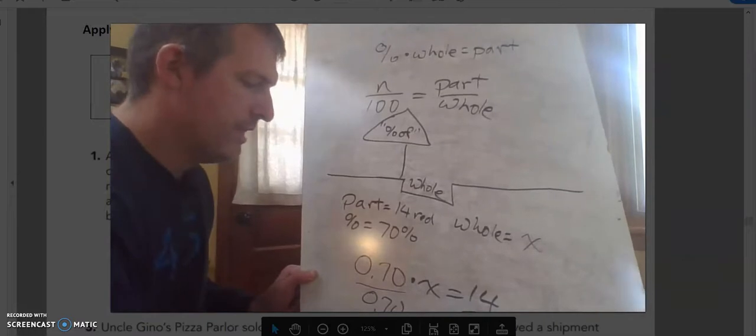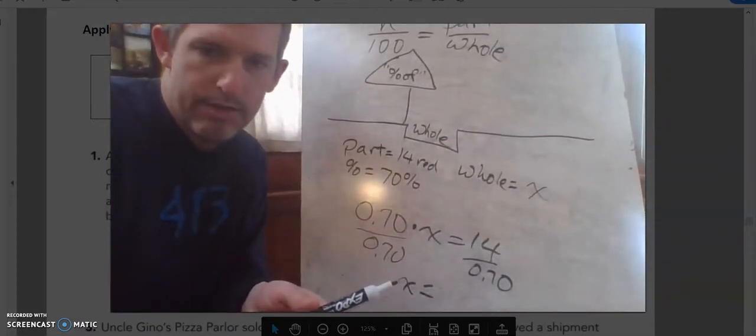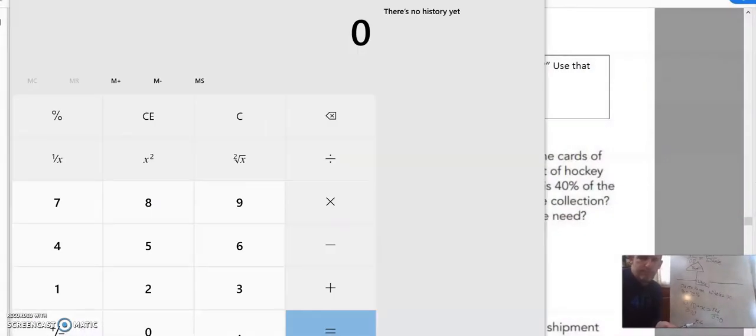To find out the whole, I need to divide both sides by 0.07 because x is being multiplied by 0.70. I need to divide both sides by 0.70. And x will equal, calculator time. Let's see here. 14 divided by 0.70 is 20.